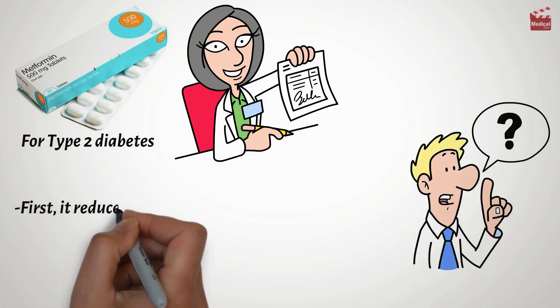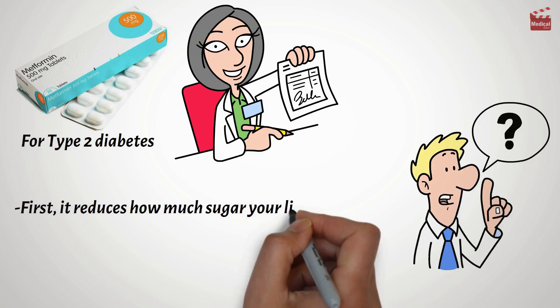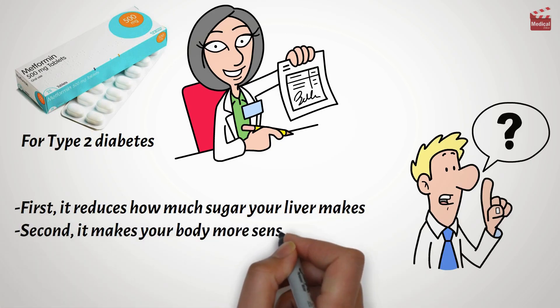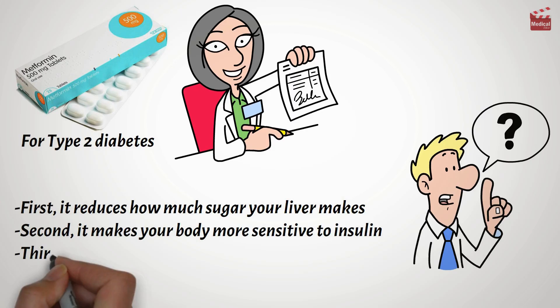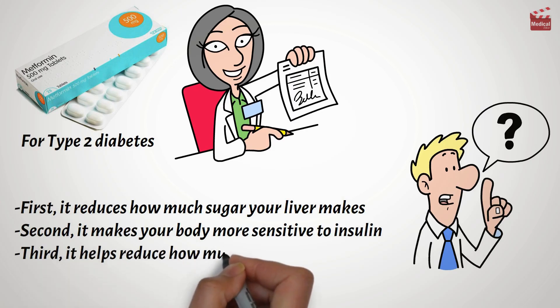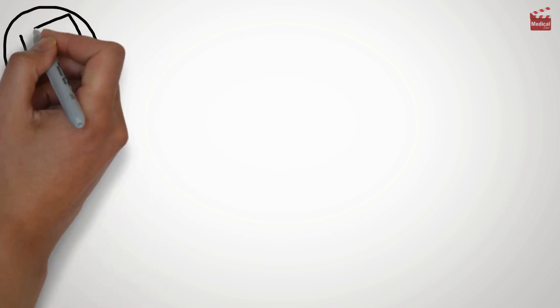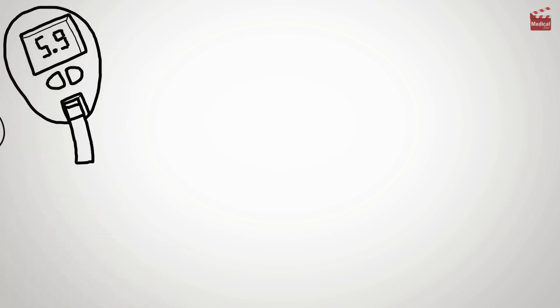Metformin works by targeting three key areas. First, it reduces how much sugar your liver makes. Second, it makes your body more sensitive to insulin. And third, it helps reduce how much sugar is absorbed from the food you eat. Together, this helps keep blood sugar levels in check, especially after meals.